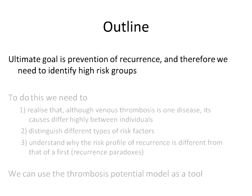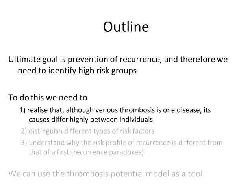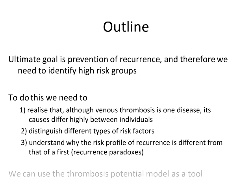In this talk, I'd like to focus on the ultimate goal of prevention of recurrence and the identification of high-risk groups. That is possible by using data from studies, but it's also important to have a conceptual framework to think about individual risk and risk profiles. We need to realize that venous thrombosis is one disease, but the risk profile can differ extremely between individuals — a pulmonary embolism in a young woman who just gave birth is completely different from that in a 75-year-old man with pancreatic cancer. The type of risk factor is related to recurrence risk.